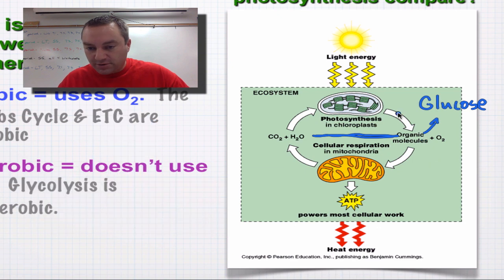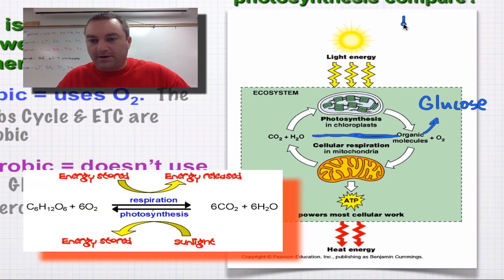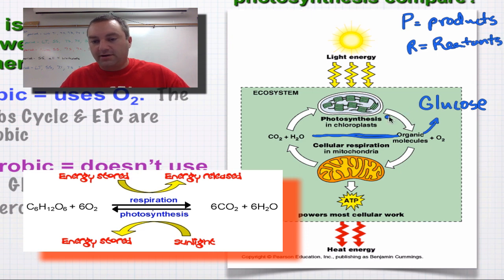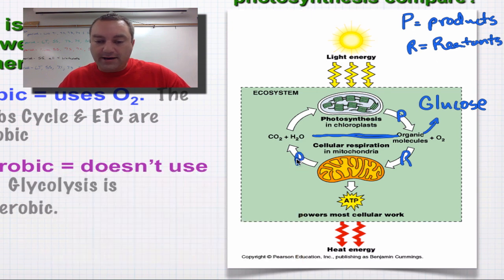will become the reactants. So let's do this over here, make ourself a little P, or a little key. P equals products, and then we'll say R equals the reactants. All right, you see these arrows right here? The products, which are glucose and oxygen, will become the reactants for the mitochondrion in cellular respiration. The products, which are of cellular respiration, which is carbon dioxide and water, will become the reactants for photosynthesis.